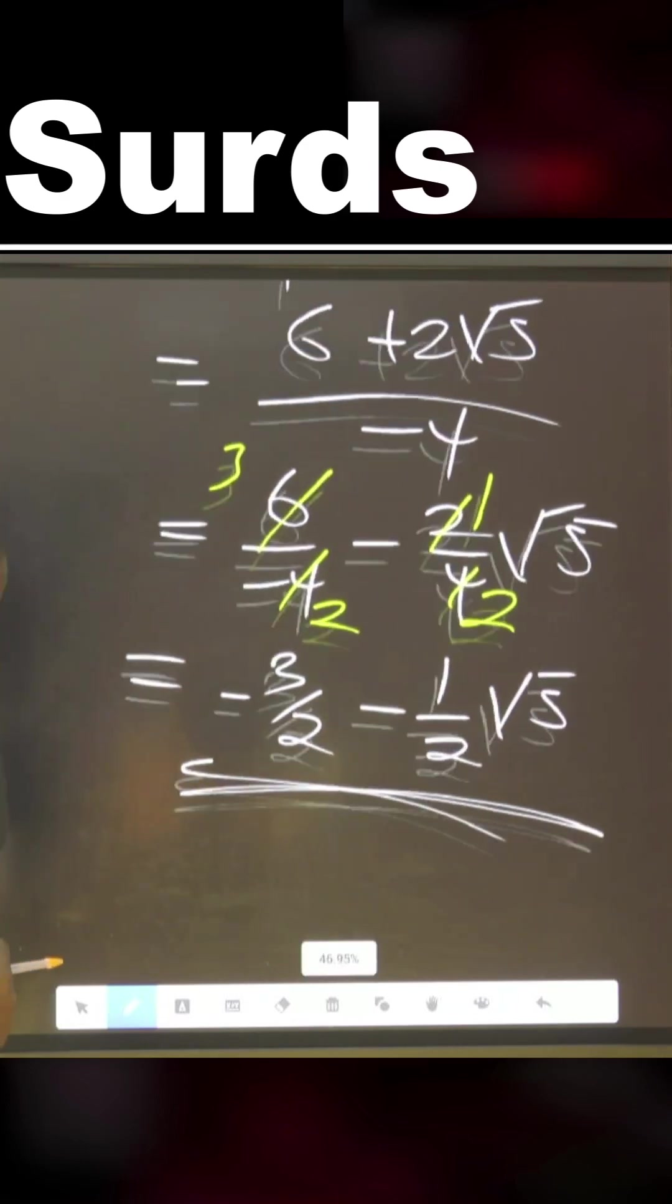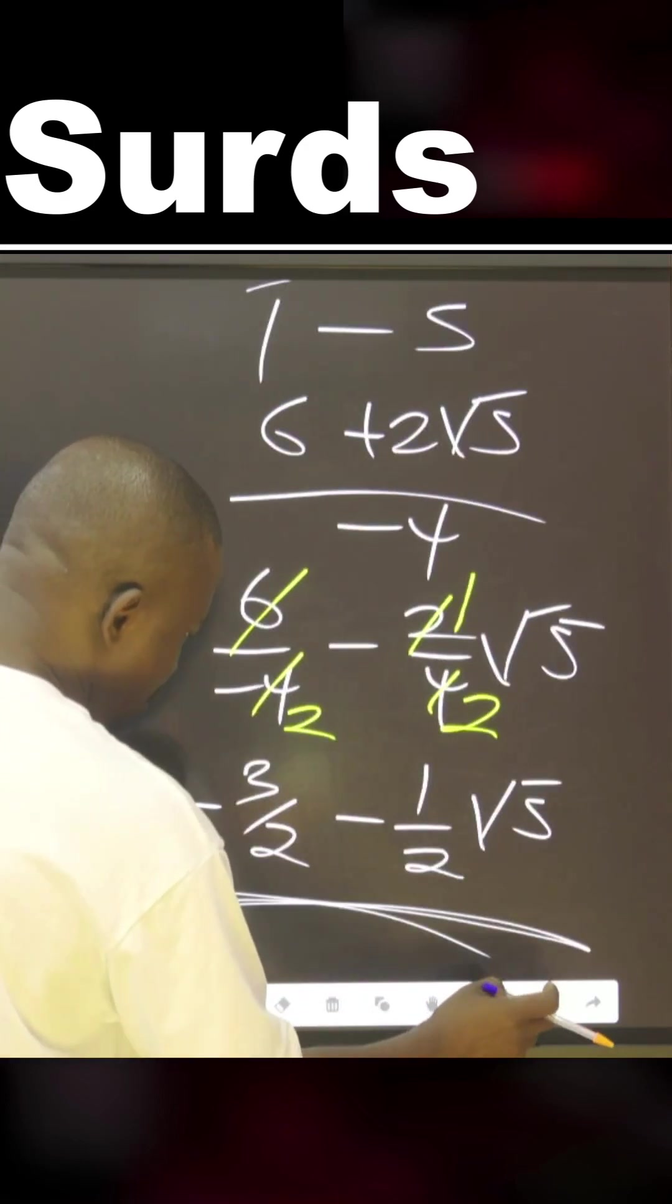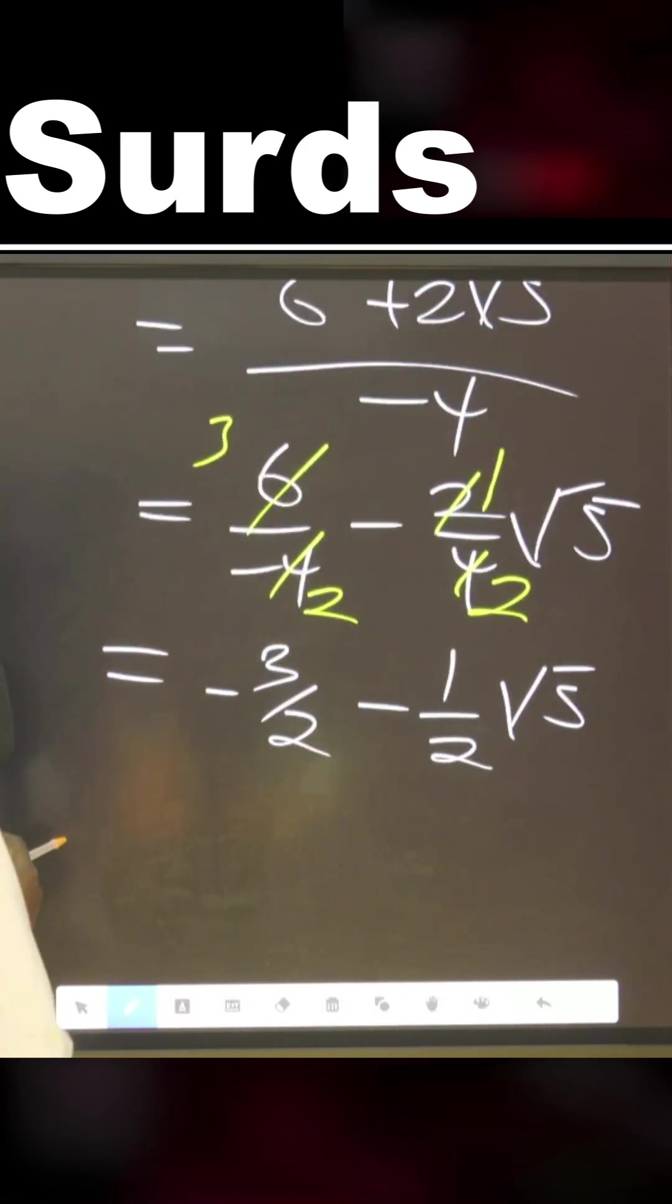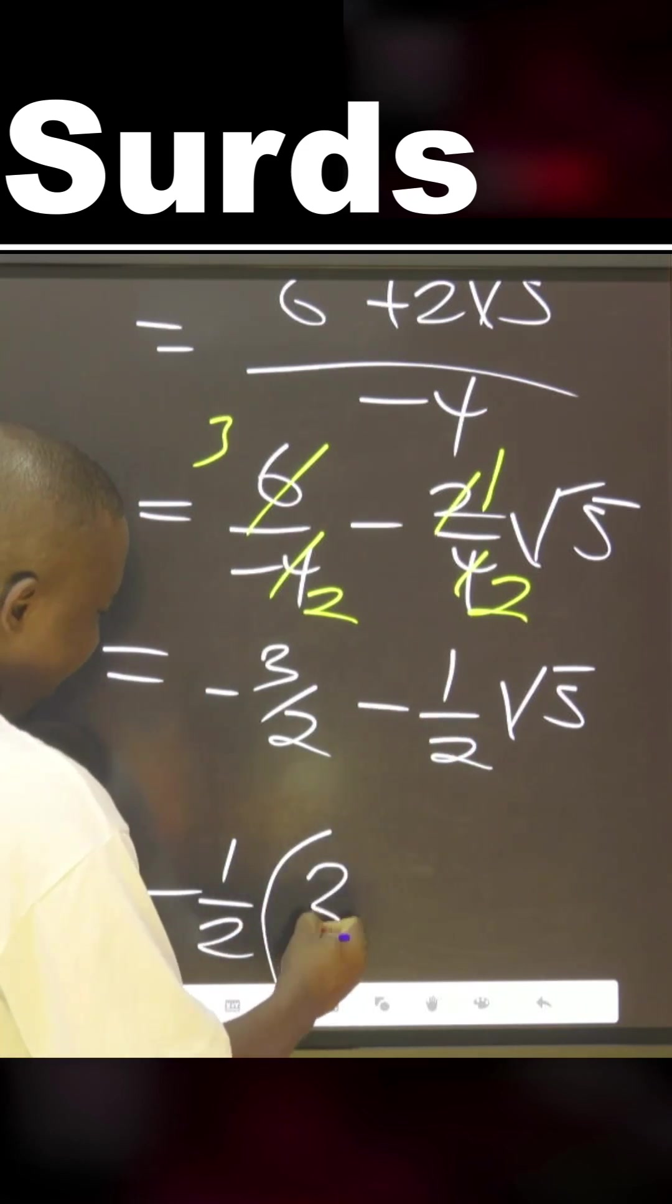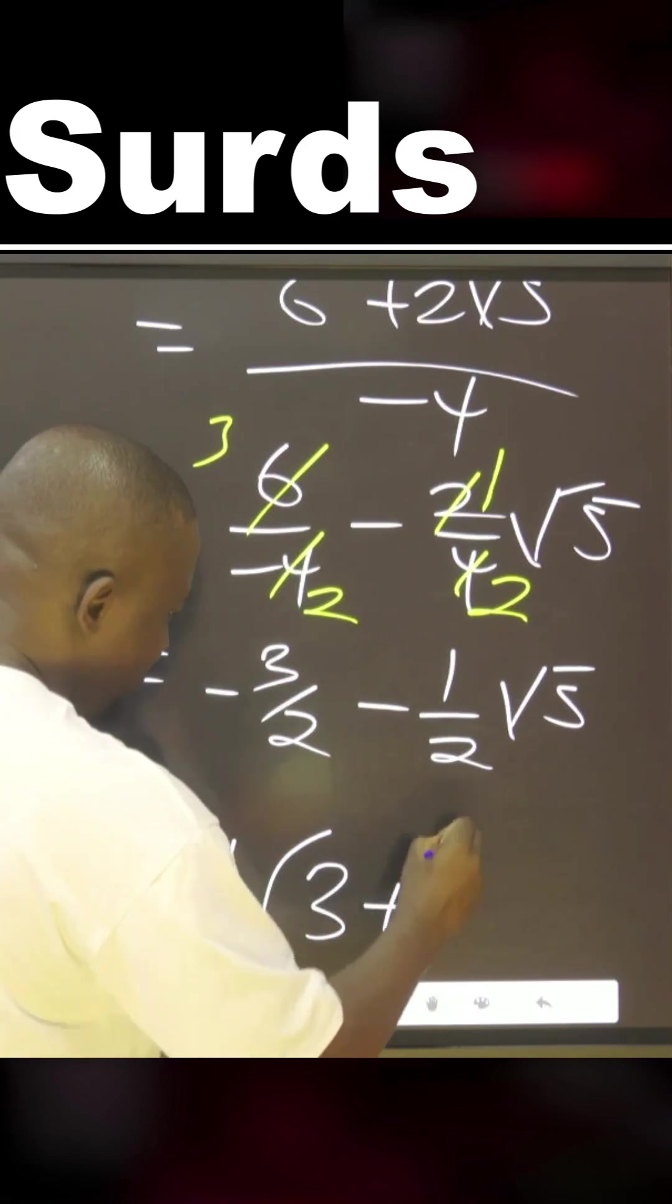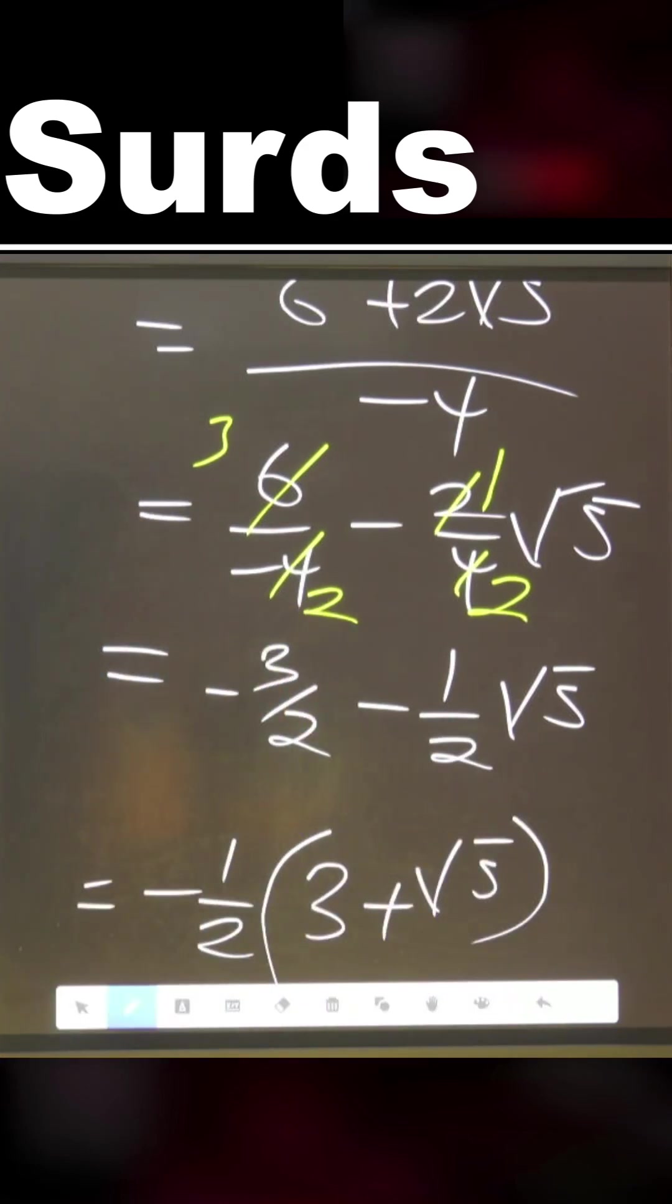So people will say, this is not the smallest way we can go. We can still do further by saying because this is minus one over two, you can bring it out, I put three here plus square root of five. You want to do it like this, the same thing. This multiply by this, the same thing. This multiply by this, the same thing.